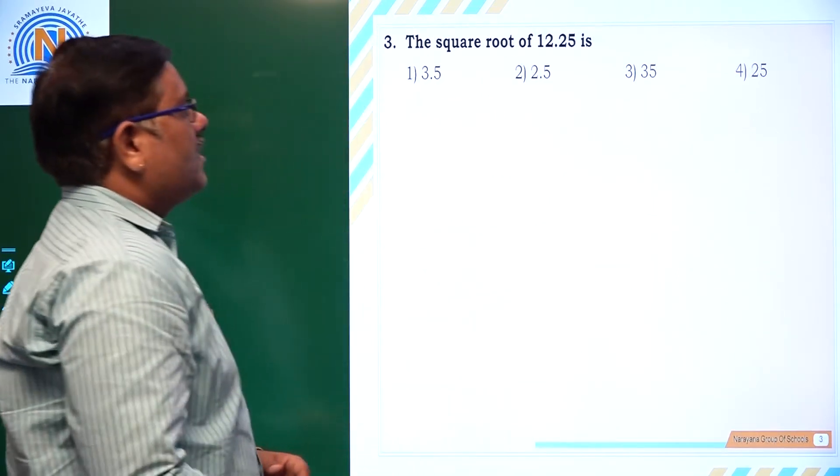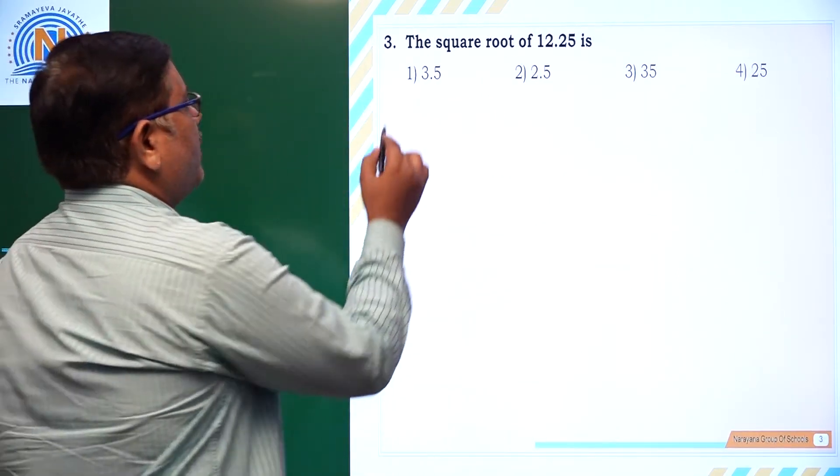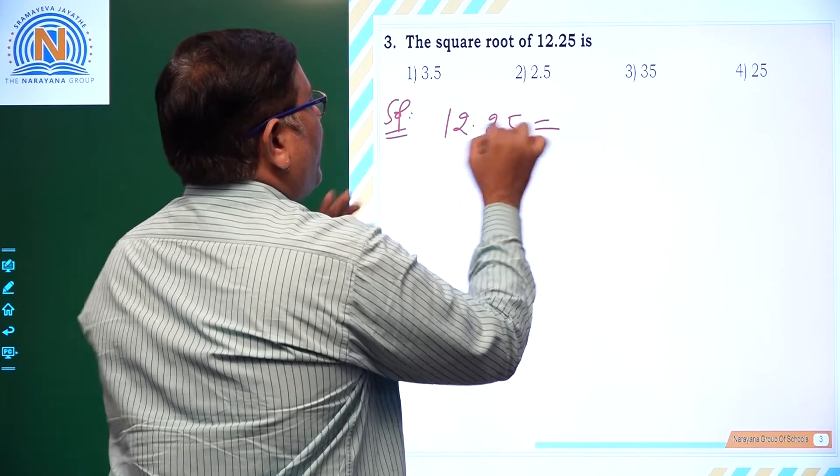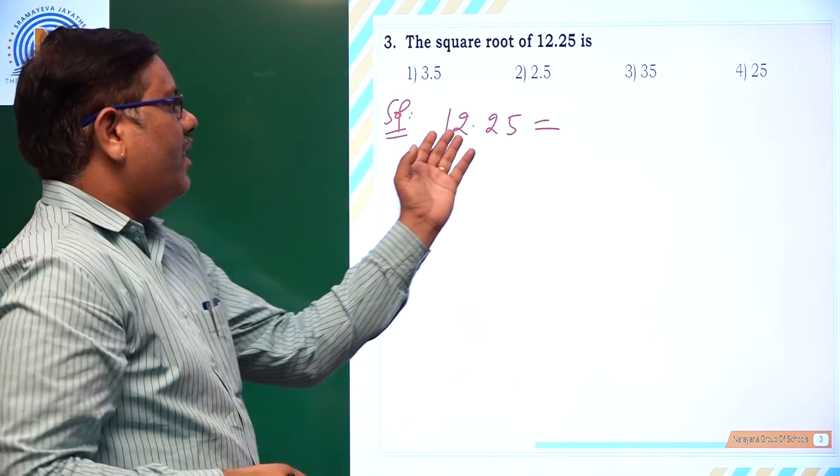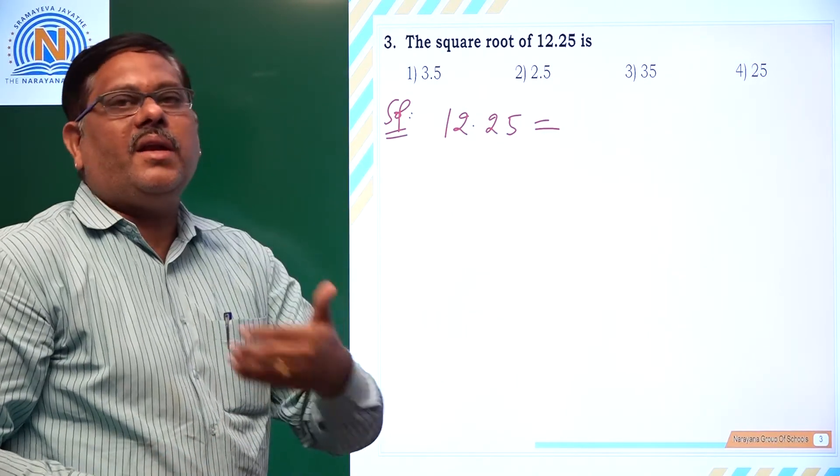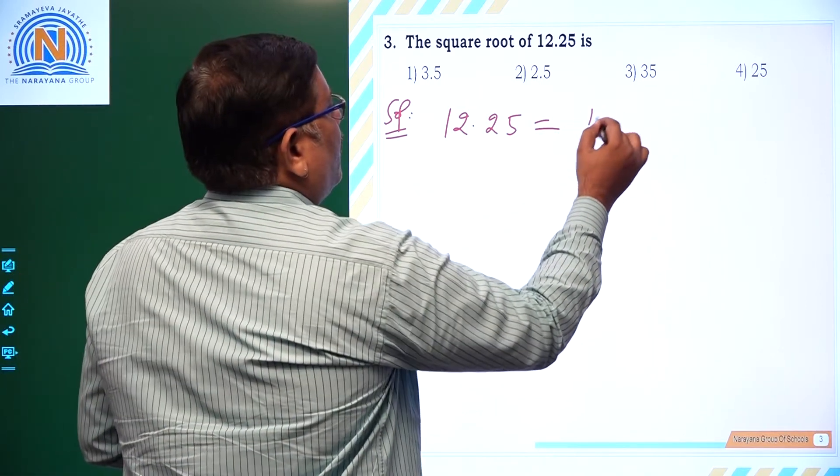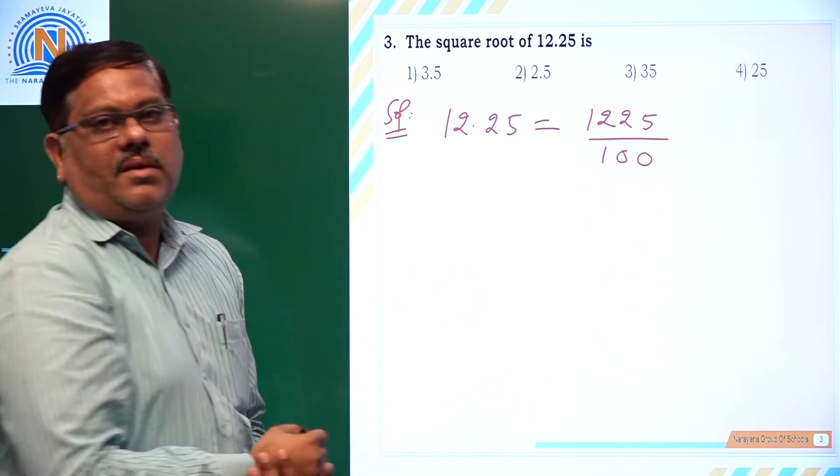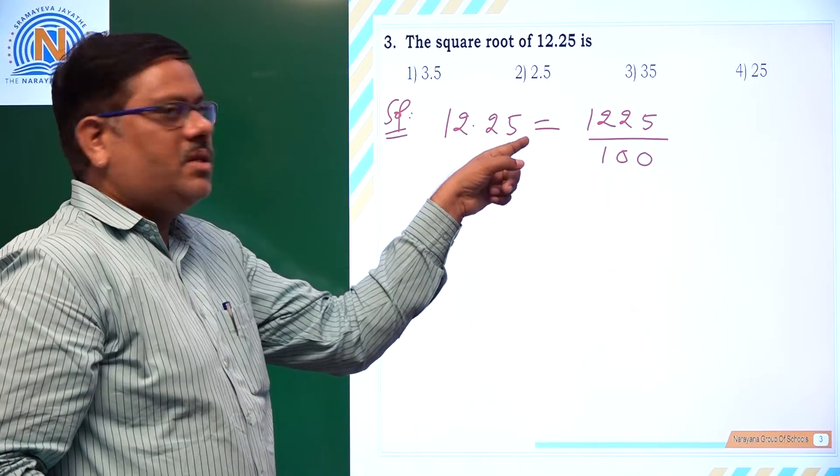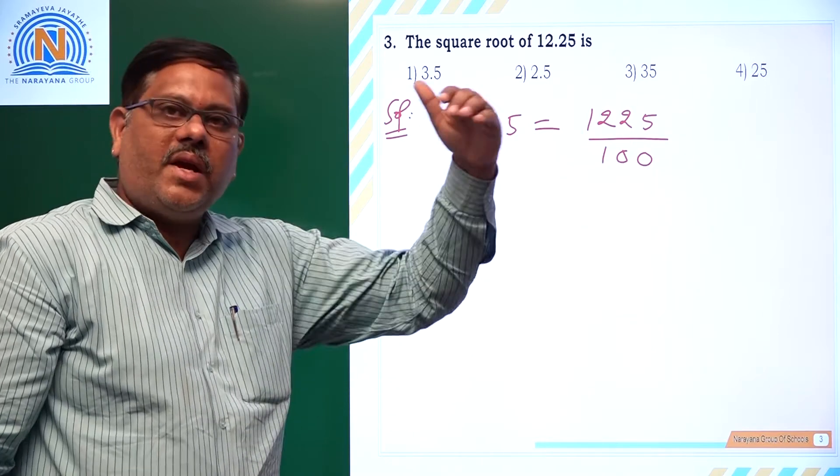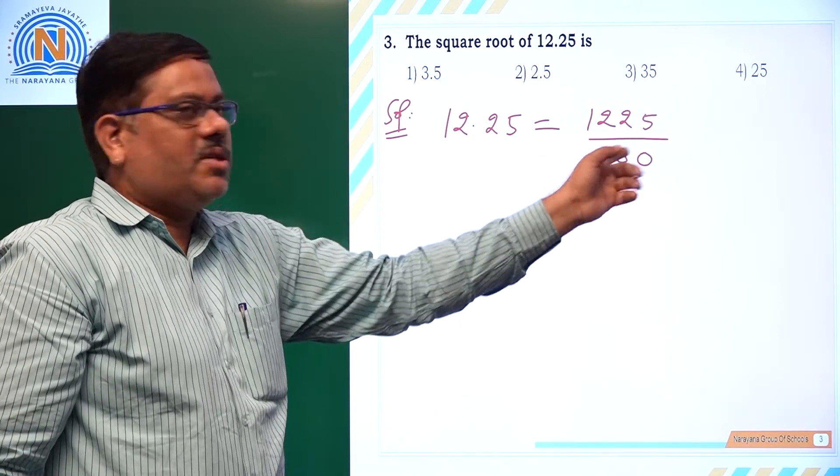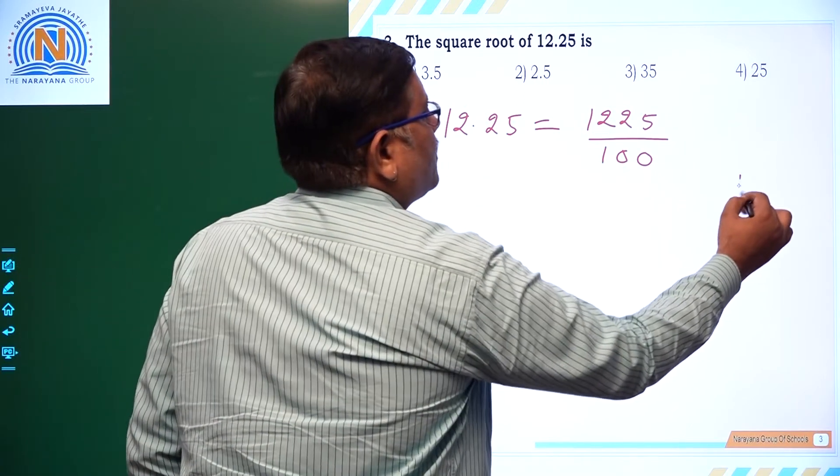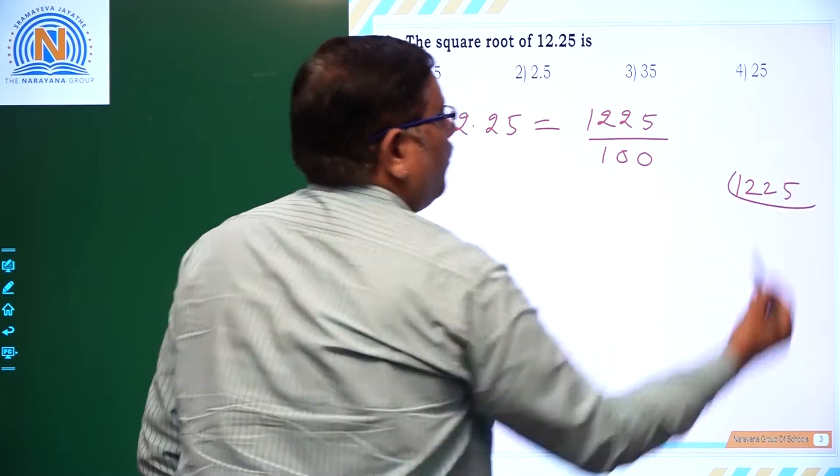Let us see the next question. The square root of 12.25 is. Whenever you have 12.25, we have a decimal part in this. What we have to do? Whenever you have a decimal part, you make it an integral part. How to convert it to the integer? You just write 12.25 upon 100. Because after decimal you have two digits. So 1 after 2 zeros, if you write in denominator, that particular total fraction becomes equal to 12.25.